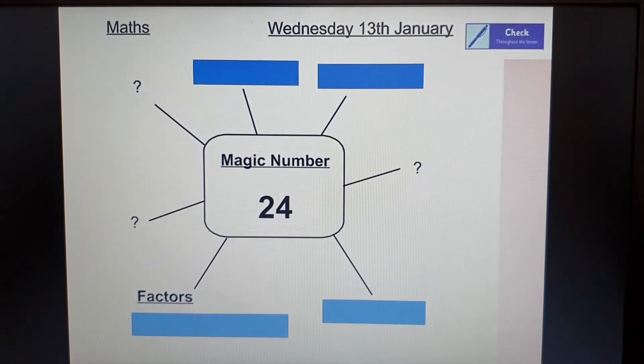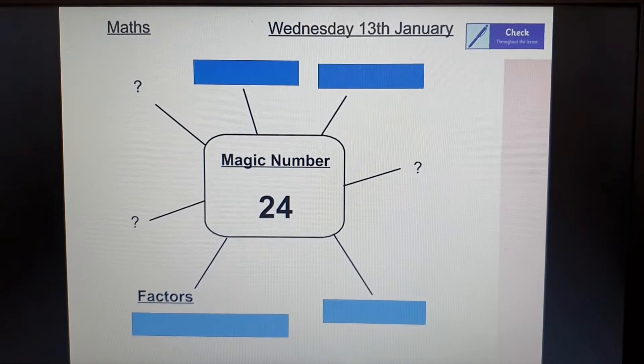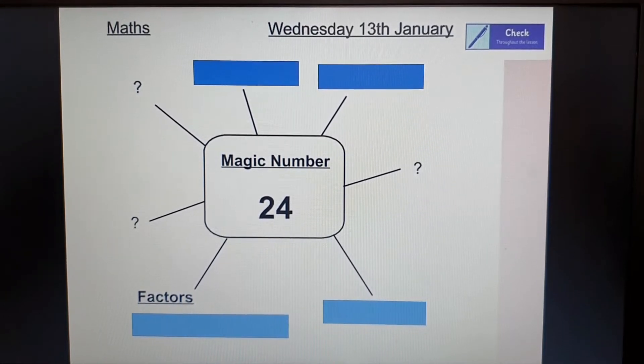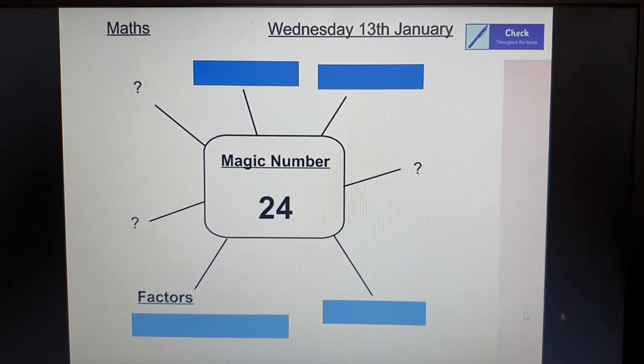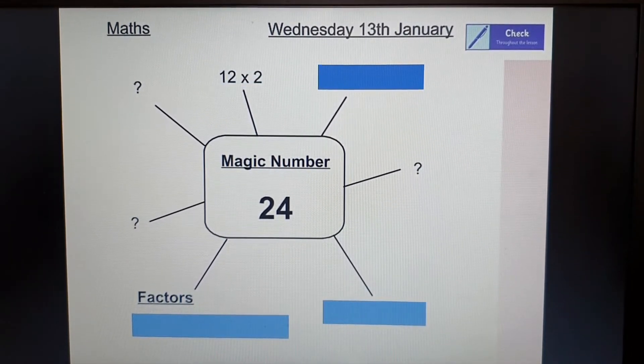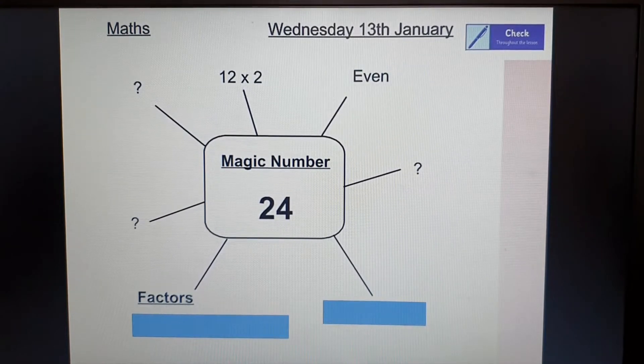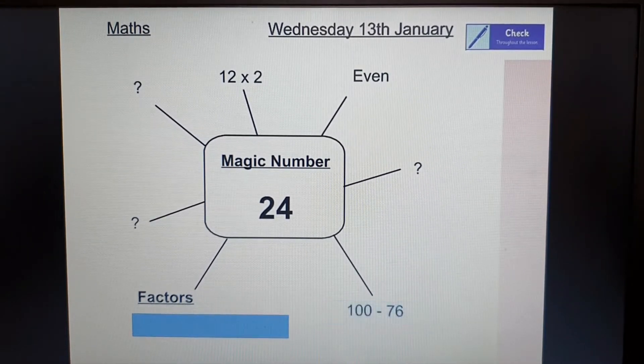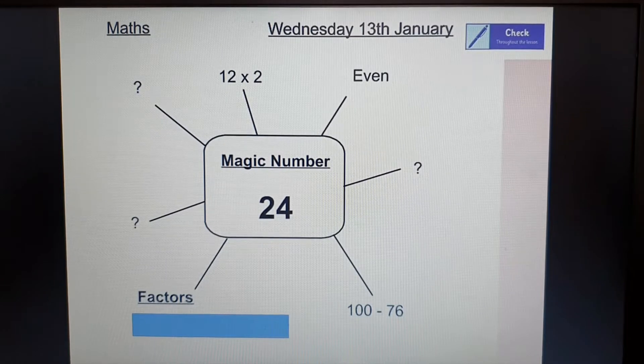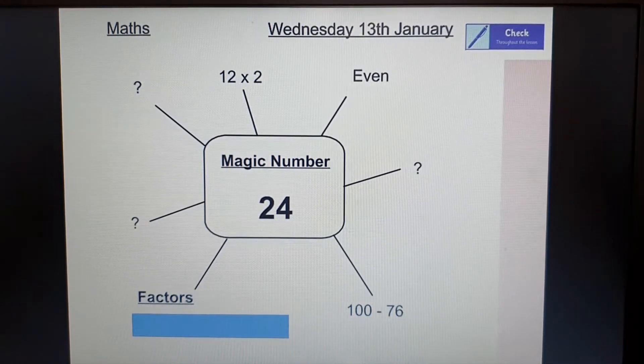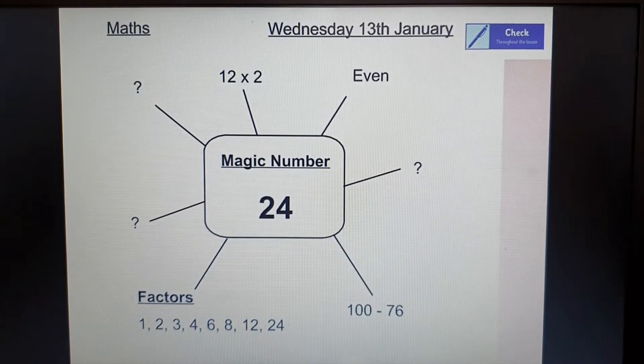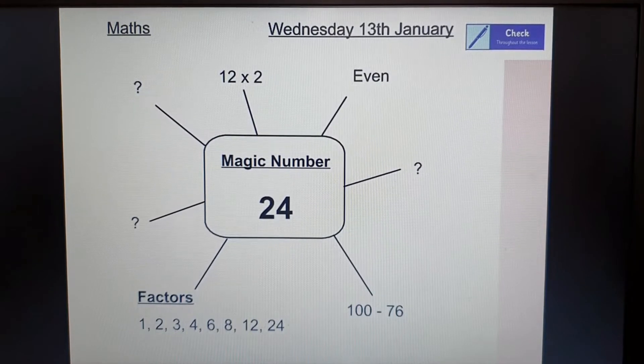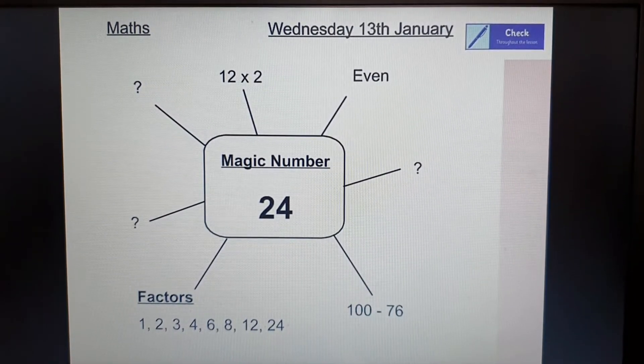To start off today I've got a little starter task for you. I'd like you to have a think about this magic number which is 24. Have a think about all the ways you can make this number. For example you could have 12 times 2. It's an even number. 100 take away 76 makes 24. And I've thought about some of the factors of 24. I wonder if you could pause the video and find your own little ways of making 24. Off you go.